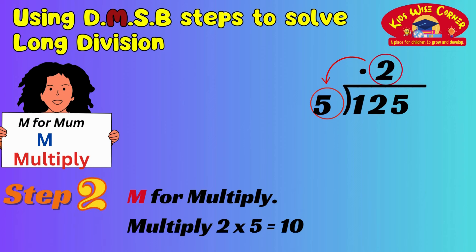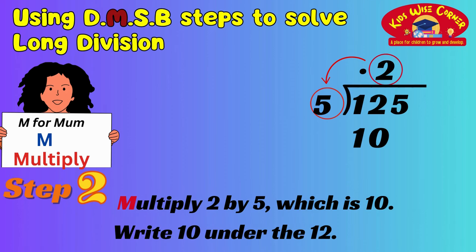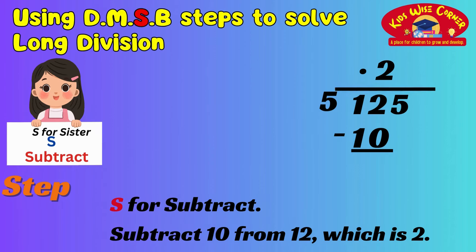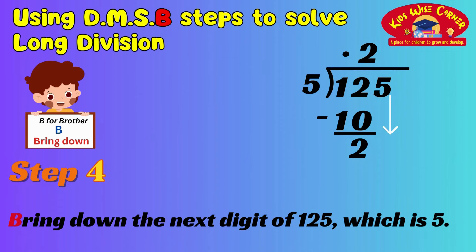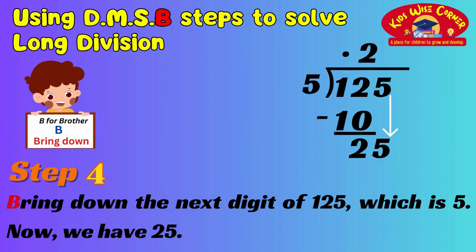Step 2 — M for multiply: multiply 2 by 5, which is 10. Write 10 under the 12. Step 3 — S for subtract: subtract 10 from 12, which is 2. Write the 2 below the 10. Step 4 — bring down: bring down the next digit of 125, which is 5. Now we have 25.